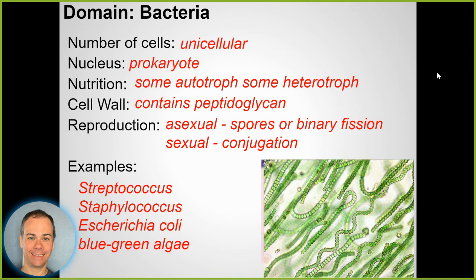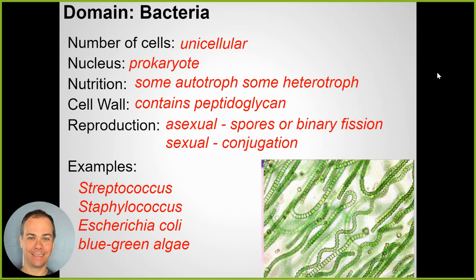Looking at blue-green algae - does their color give you any indication? They're autotrophs. We know chlorophyll, the pigment that absorbs sunlight, is green, and these blue-green algae are green because they contain chlorophyll, which allows them to do photosynthesis.